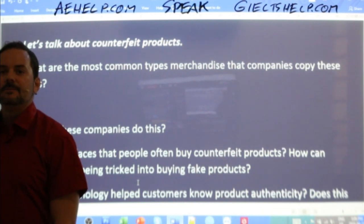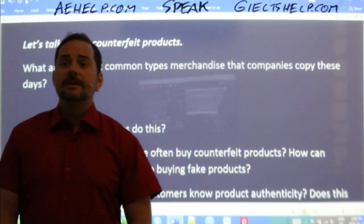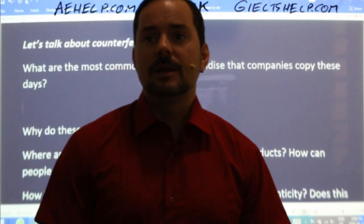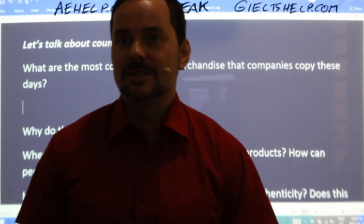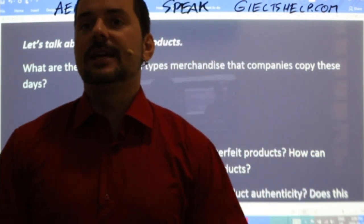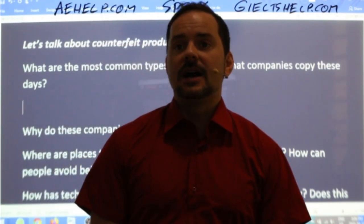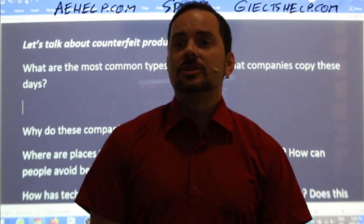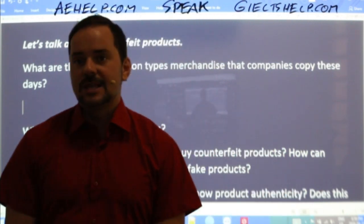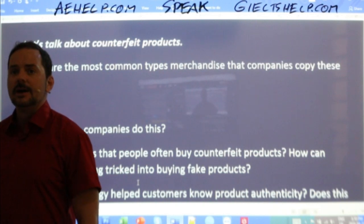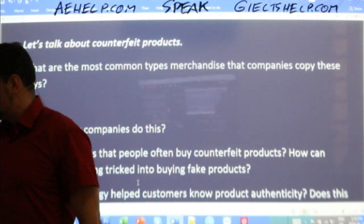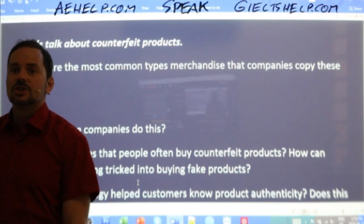We have tons of answers coming in. Roshni says: 'There are a variety of items that companies replicate, like clothes, precious crystals, and watches, in order to gain profits by selling cheap material — like I mentioned in the previous part.' Good, Roshni — nice connection. Maksud says many companies copy brands like Adidas, Nike, and even iPhone mobiles. Maksud, remember to connect, and note that you're talking about brands — merchandise is closer to what Roshni was saying about shoes, clothes, and watches.